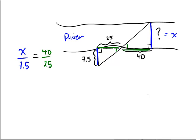So now we have a proportion, we can use cross multiplication to try to solve this. 25x equals 7.5 times 40, and 7.5 times 40 is, so that's 300, right?